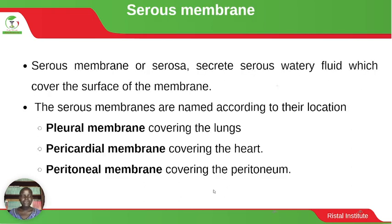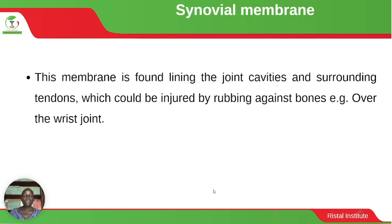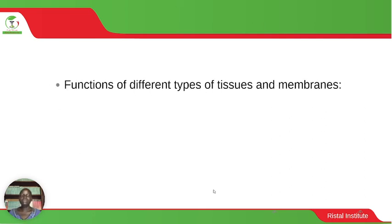The serous membrane or serosa secretes a serous watery fluid which covers the surface of the membrane. Serous membranes are named according to their location: the pleural membrane covers the lungs, the pericardial membrane covers the heart, and the peritoneal membrane covers the peritoneum. The synovial membrane lines joint cavities and surrounds tendons which could be injured by rubbing against bones, such as over the wrist joint.